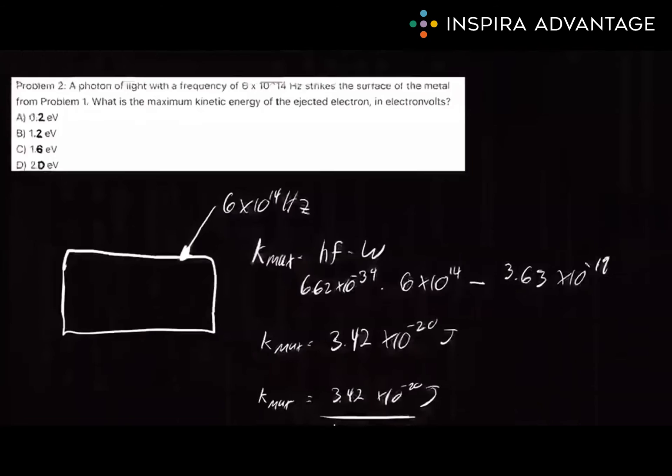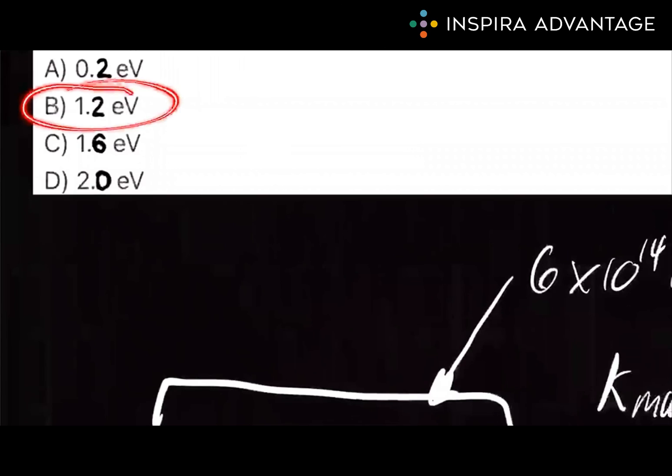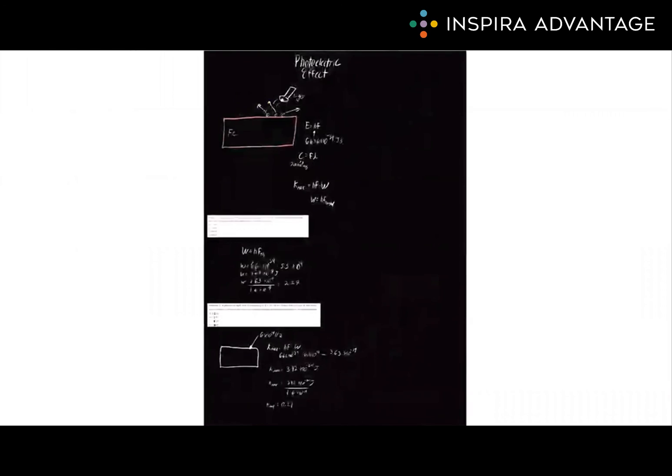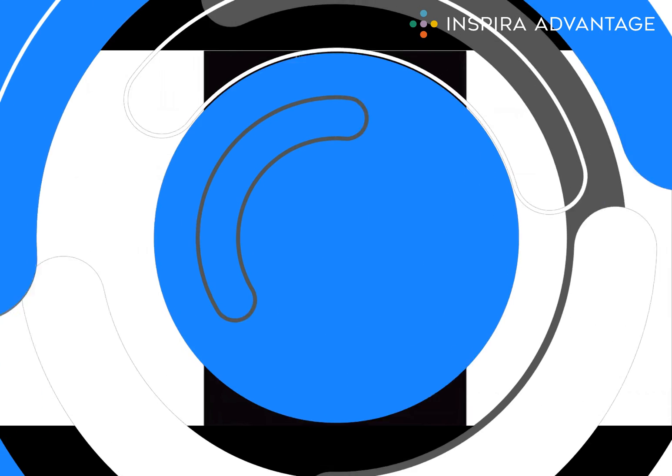We do that, and we get a Kmax of 0.21 electron volts. Is that an option? Oh, you betcha. We've got answer choice B, 0.21. Thank you so much for watching our video on the photoelectric effect, and I will see you next time.